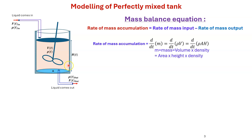First we calculate the rate of mass accumulation, which is dm/dt. Mass m can be written as ρ·V (density times volume), and volume V can be written as area A times height H. So finally, dm/dt = d(ρV)/dt = d(ρAH)/dt.